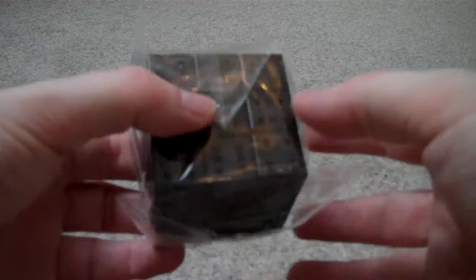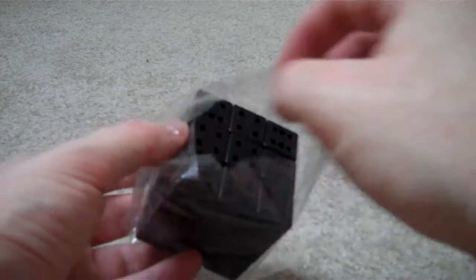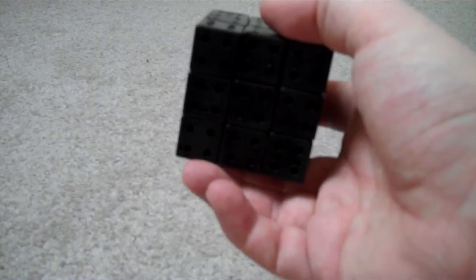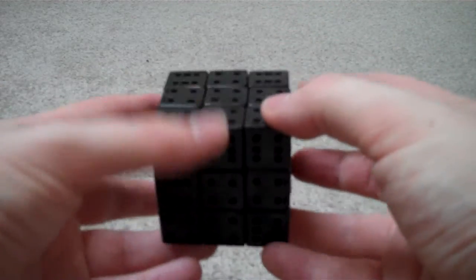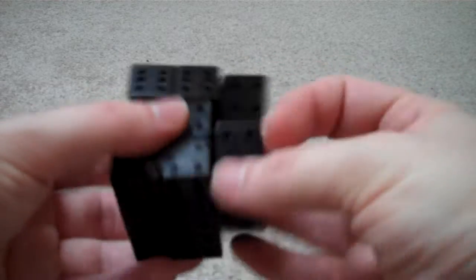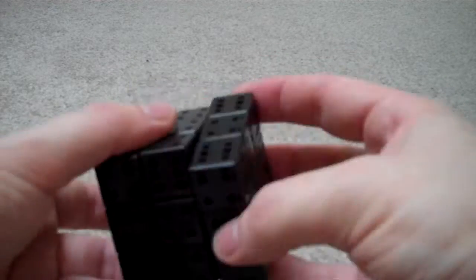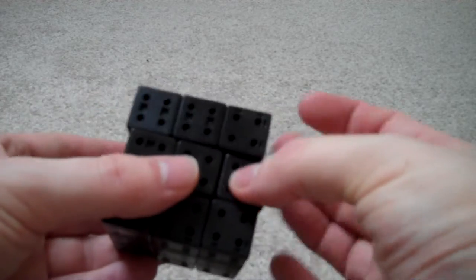And here is the Cube itself. Looks like a normal sized 3x3. So you can see it's got all these little holes in it to fit the tiles onto. And it turns really nicely. I'm really surprised by how well it turns, actually.